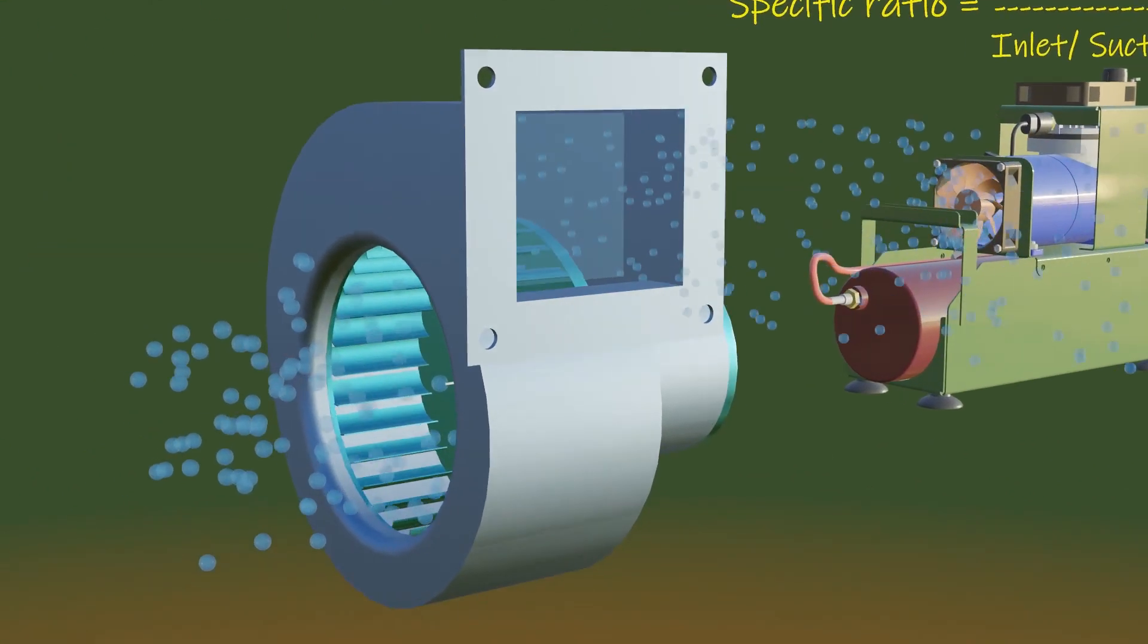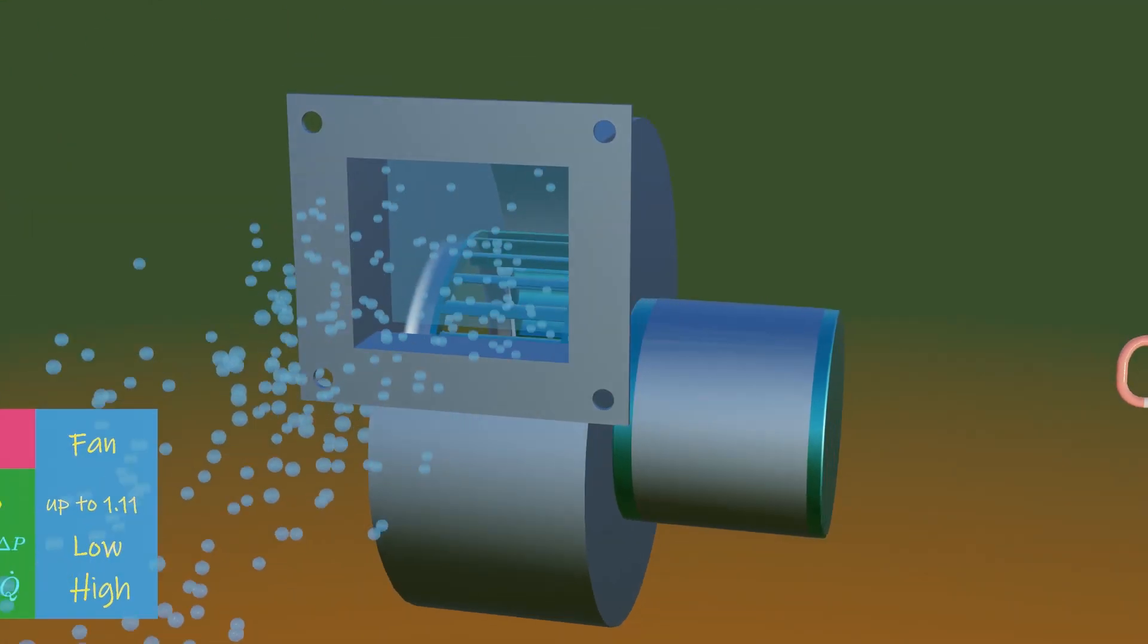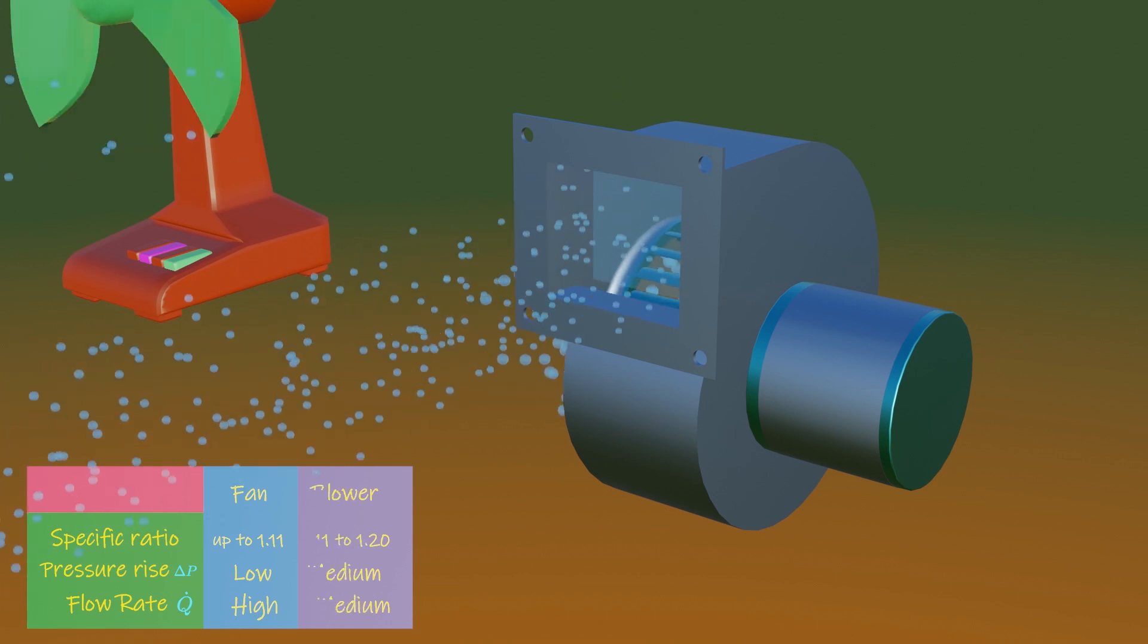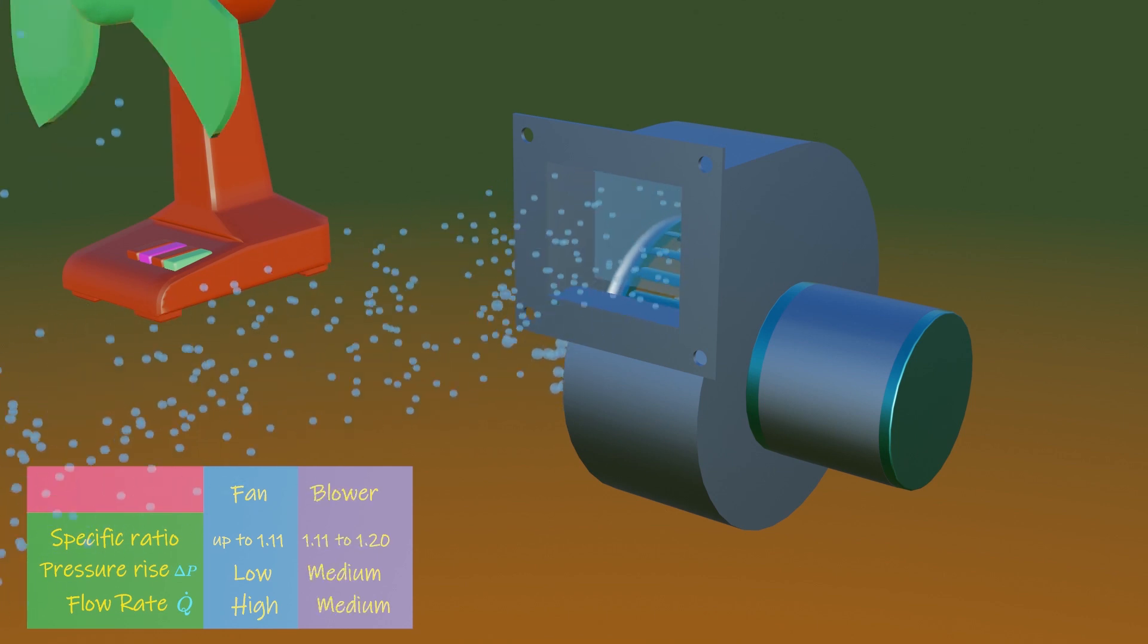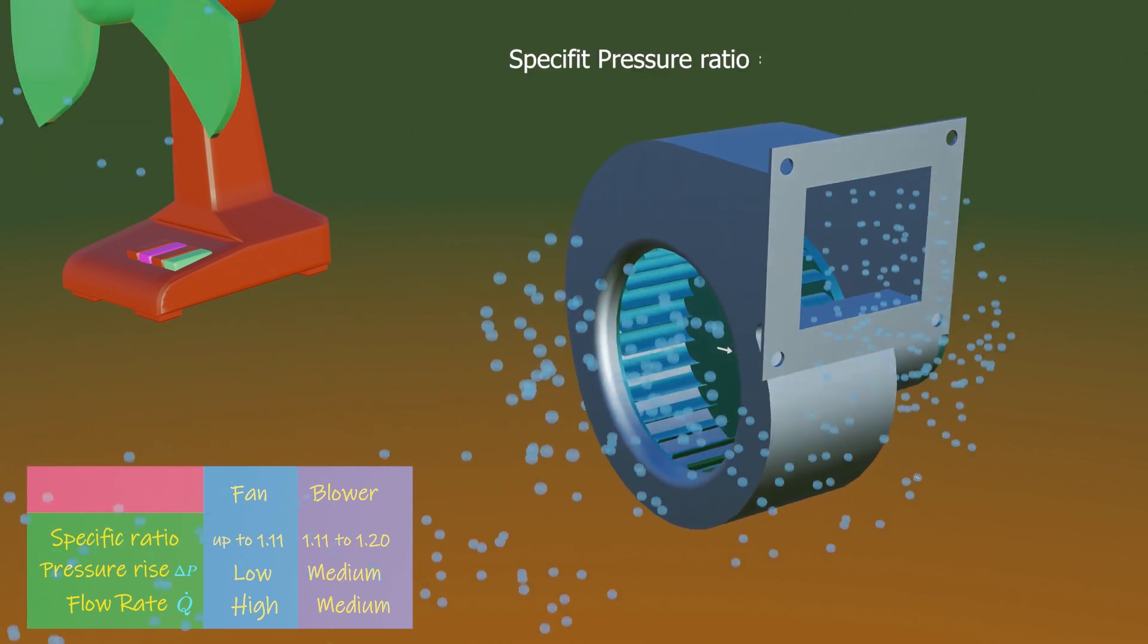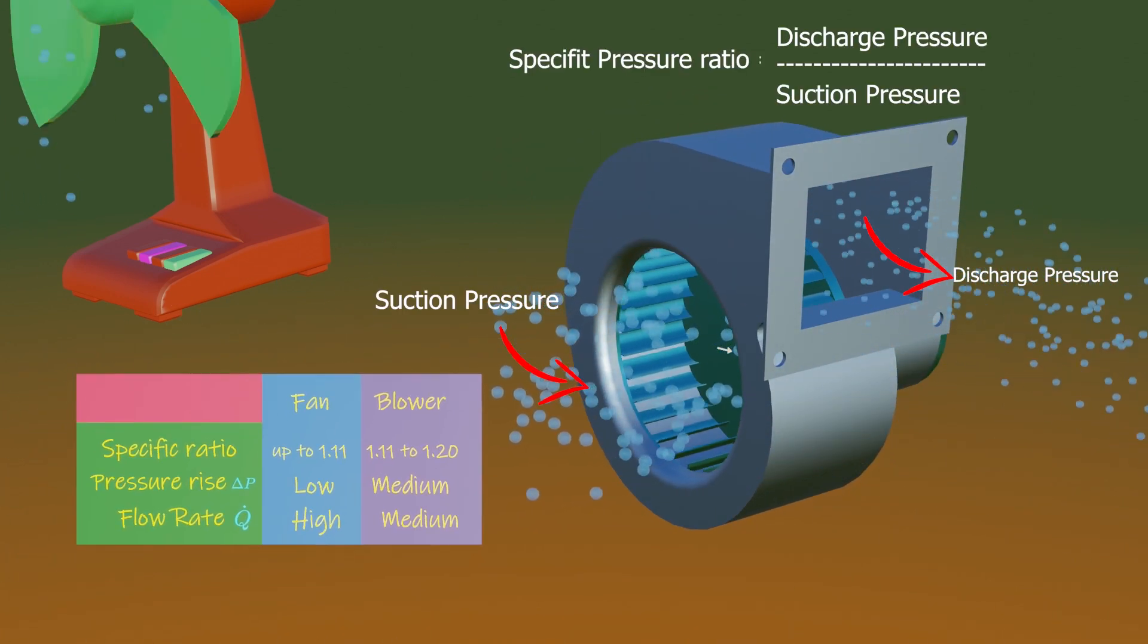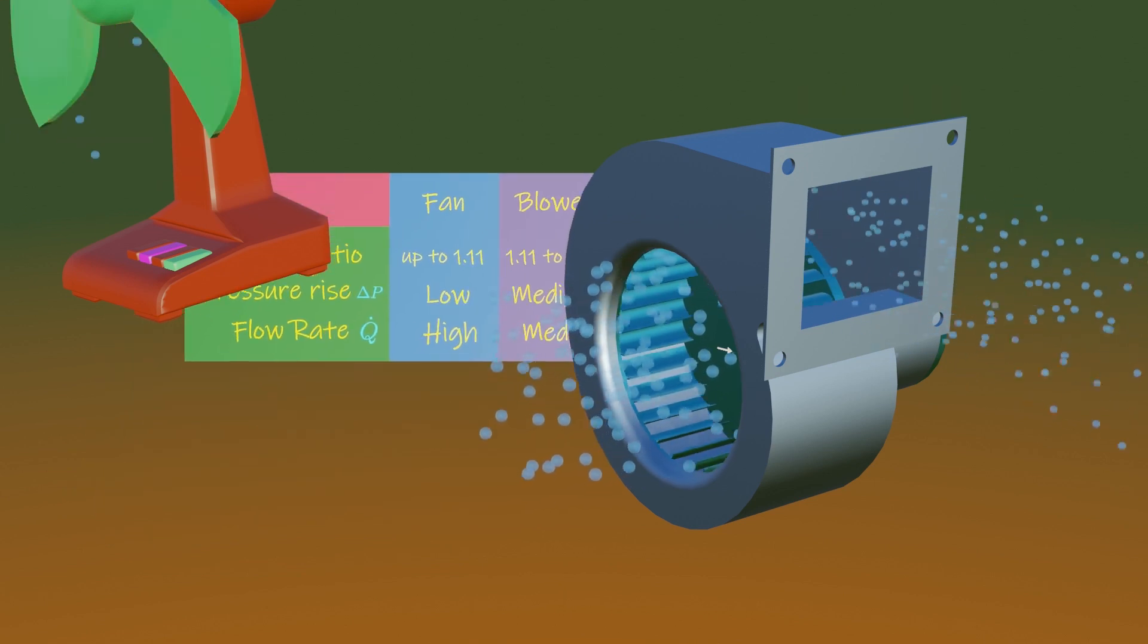The term blower is sometimes used interchangeably with fan. In general, a blower has a slightly higher pressure rise than a fan, from 1.11 to 1.2. Here again, pressure rise is defined as discharge pressure over inlet pressure. Blowers are used in situations where the system resistance is higher than that for a fan.